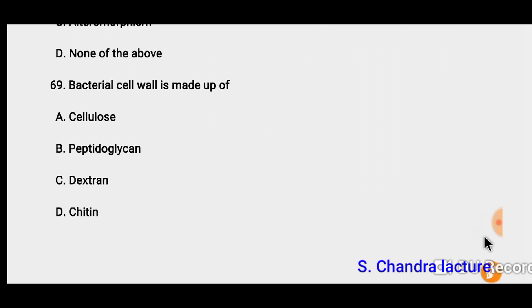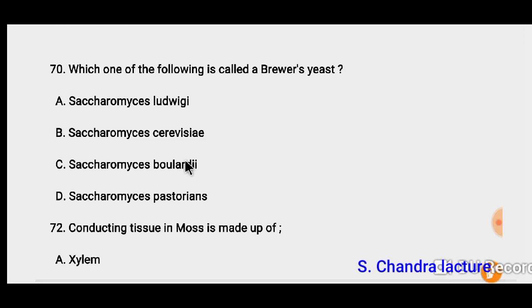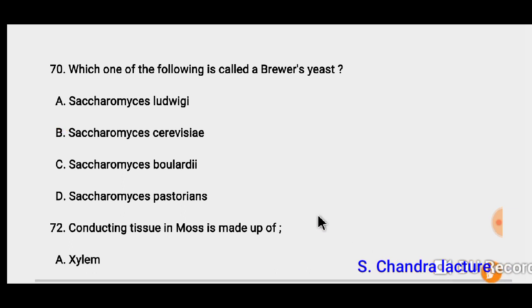Question 69: Bacterial cell wall is made up of peptidoglycan. Question 70: Saccharomyces cerevisiae is called baker's yeast. The correct option must be B.